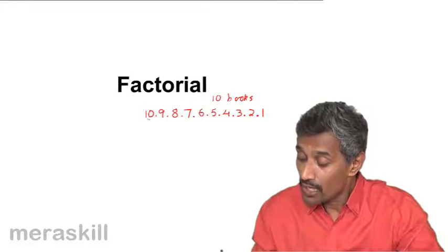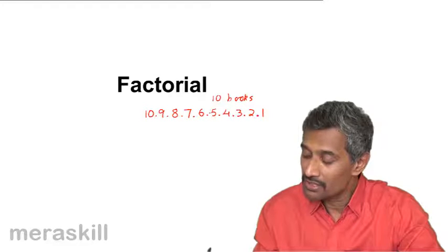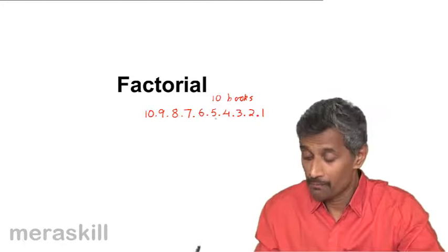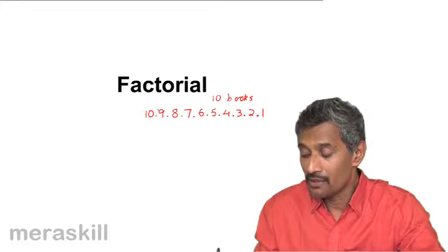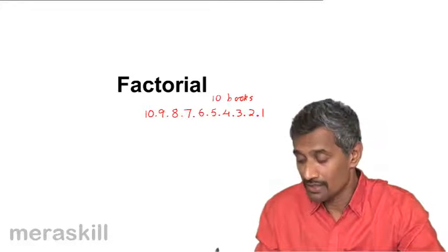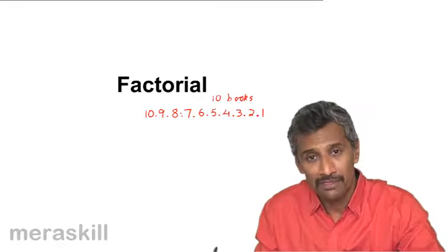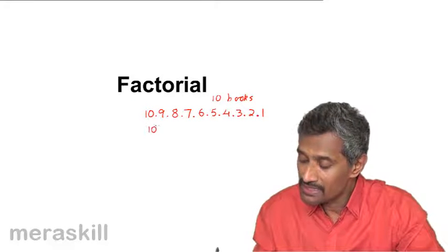So now we see it means 10 × 9 × 8 × 7 × 6 × 5 × 4 × 3 × 2 × 1. This means you are multiplying a number by the next lower number, and that by the number next to it. This can be written as 10 factorial.